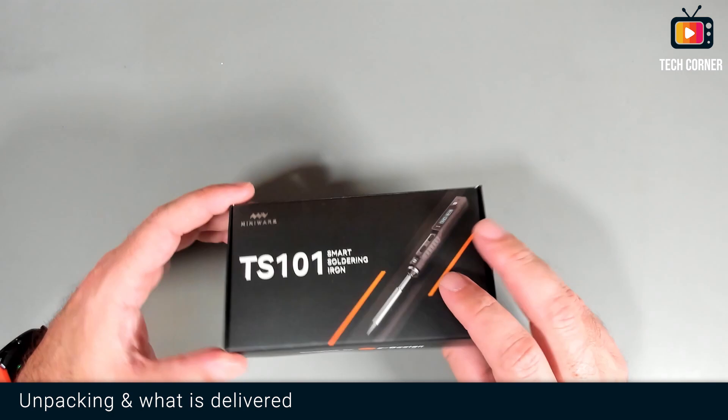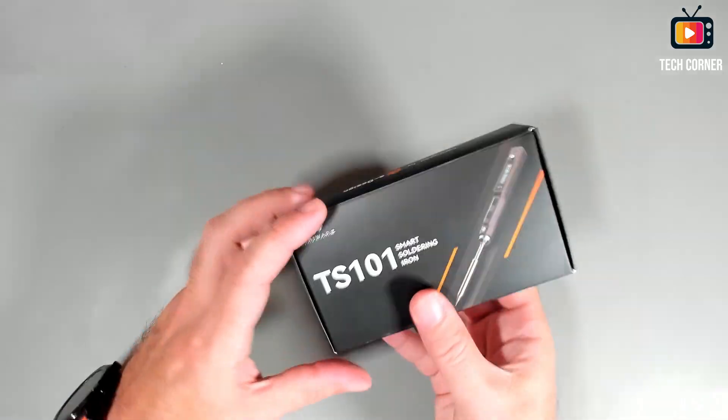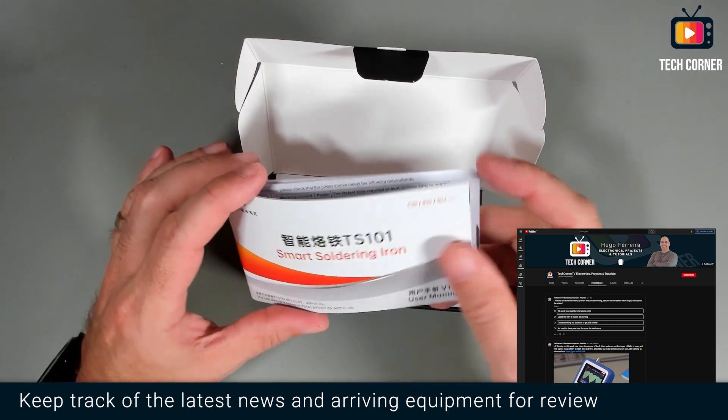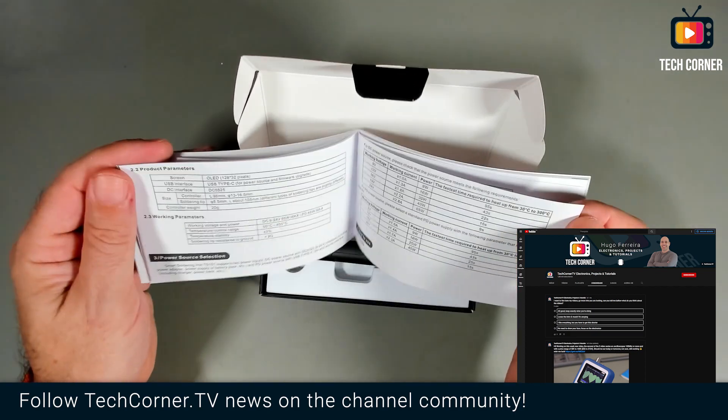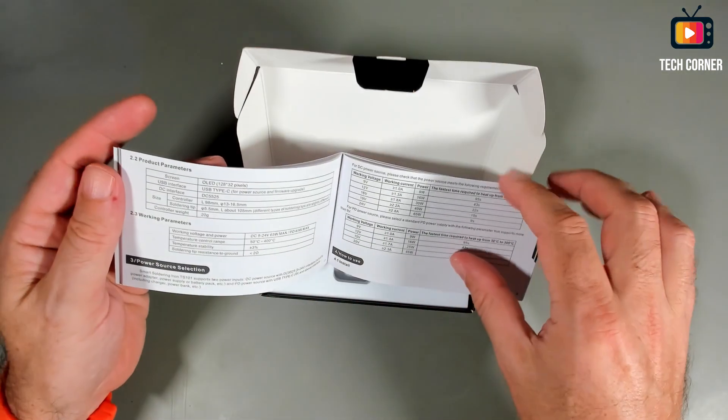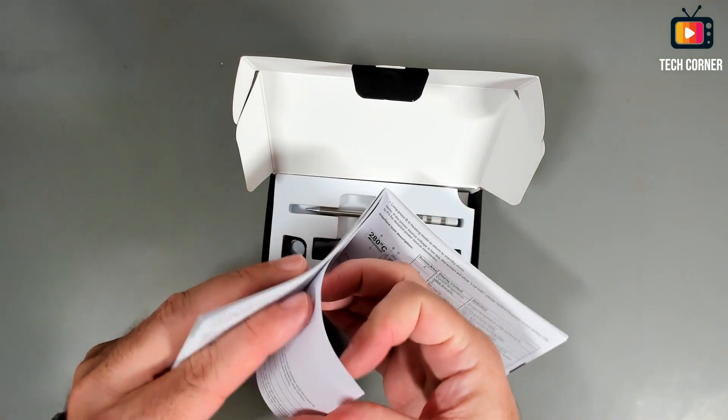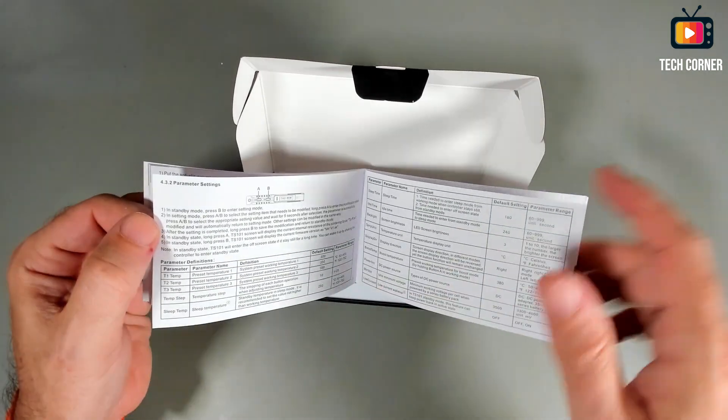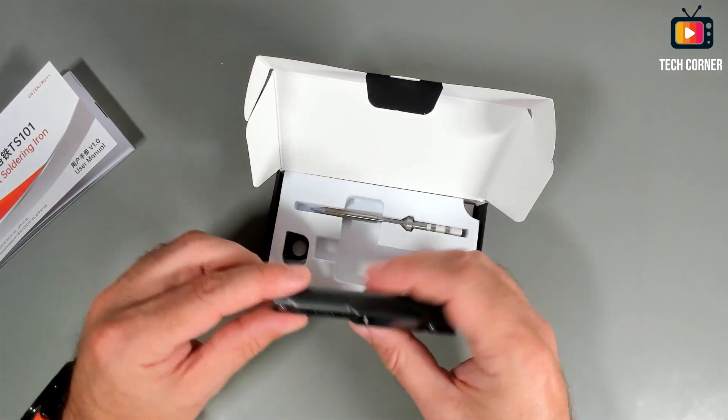As usual, let's do the unbox and see what is delivered in this product. We have a retail box, a very small retail box to be honest. Let's open it. It is delivered with a user manual. It has Chinese, English, and I believe some other language like Russian. It seems very elaborate with diagrams, how to do everything, infographics. The options, yeah it seems okay.